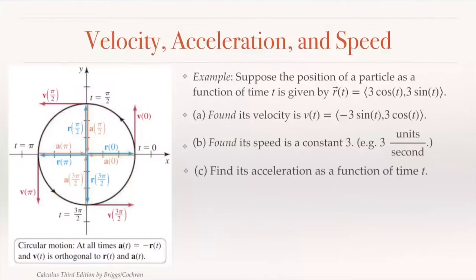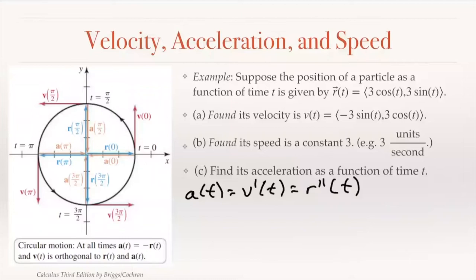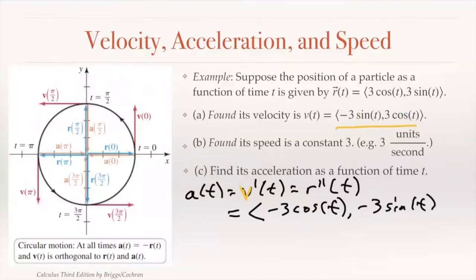Now let's find the acceleration as a function of time. Acceleration is the derivative of velocity. We already found the velocity vector is (−3sin t, 3cos t). Taking the derivative: derivative of −3sin t is −3cos t, and derivative of 3cos t is −3sin t. So the acceleration as a function of time is (−3cos t, −3sin t).